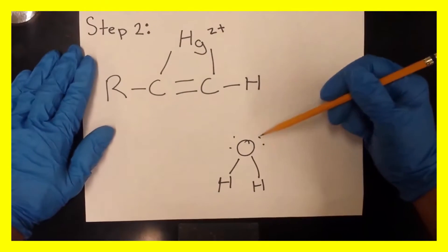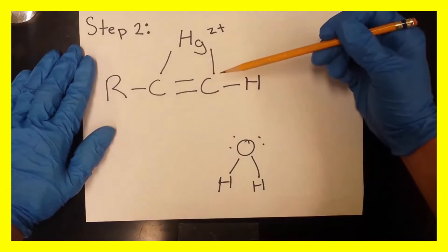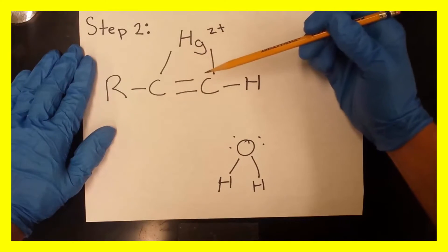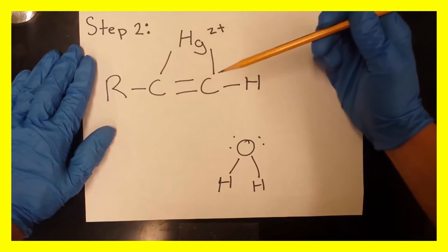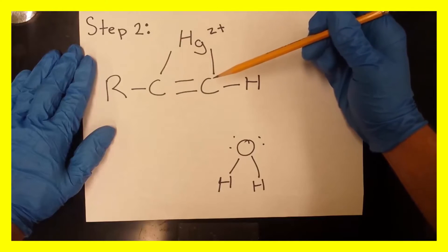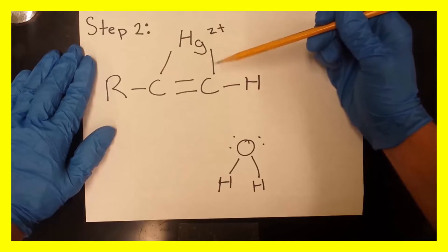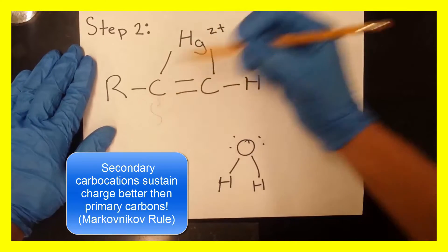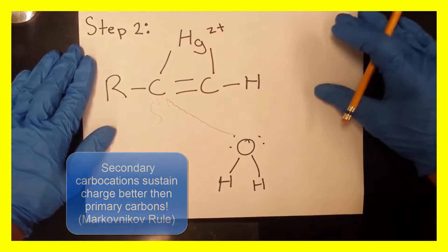There, this oxygen will be attracted to one of the partial positive carbons, both of which are partial positive, but one can actually sustain that partial positive better than the other, taking from the knowledge of carbocations. Primary carbocations cannot hold a charge as well as secondary carbocations, so this will have the actually greater partial positive, which therefore this oxygen will attack right there.